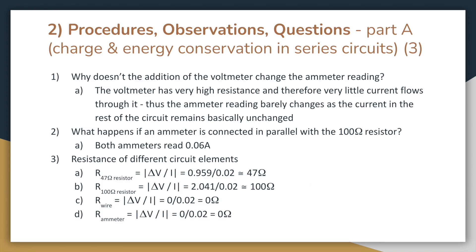So to answer a few questions for this section, why doesn't the addition of a voltmeter in parallel change the ammeter reading? Well, because the voltmeter has a very high resistance and therefore only a very small amount of current flows through it, and so the current in the rest of the circuit remains constant.